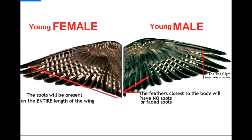The second method to find whether your bird is male or female is by observing the feathers. This is the feather of a young bird less than one year old. If you see the male bird, it will have dots only in the partial feathers.